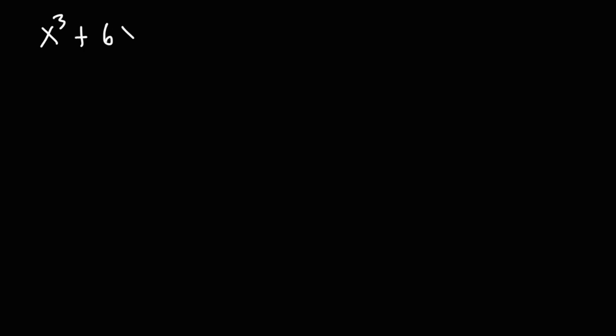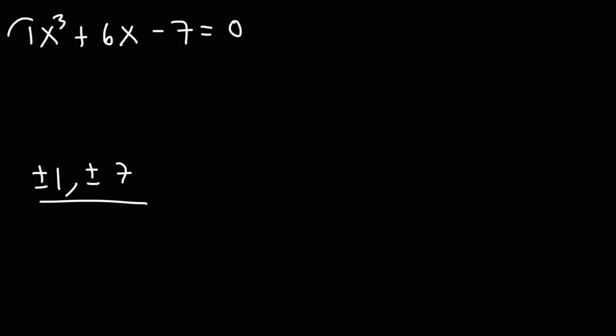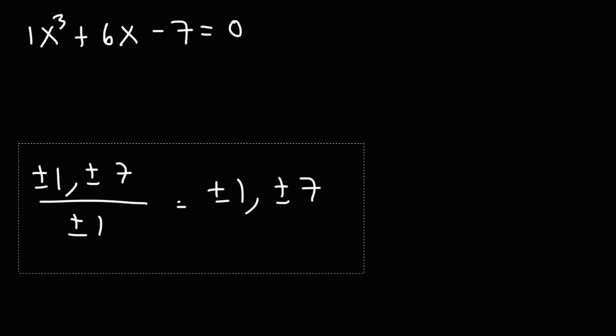Now let's work on one more example: x cubed plus 6x minus 7 is equal to 0. This expression will be hard to factor directly, but we can use synthetic division. Before we do that, we need to make a list of all possible zeros. We take all the factors of the constant term 7 — that's plus or minus 1 and plus or minus 7 — and divide by the factors of the leading coefficient, which is just plus or minus 1. So our possible rational zeros are just 1 and 7.